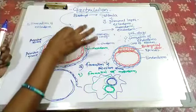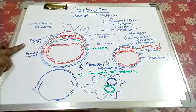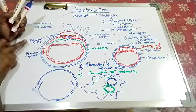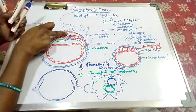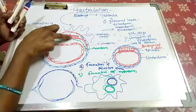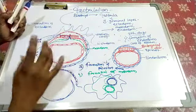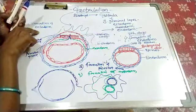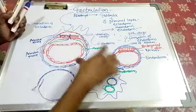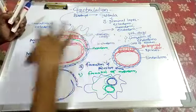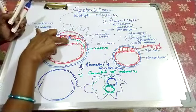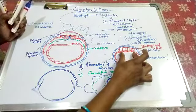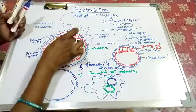The primitive streak is very much necessary because its formation designates the bilateral symmetry of the embryo. The primitive streak leads to the formation of the bilaminar layer first, and then the trilaminar layer.